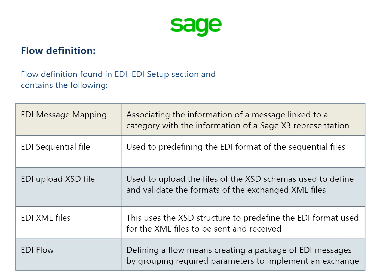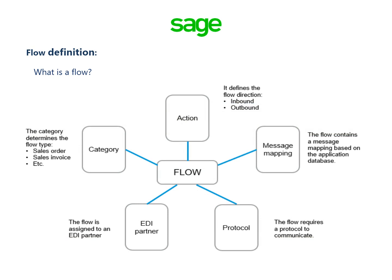EDI flow: Defining a flow means creating a package of EDI messages by grouping required parameters to implement an exchange, by specifying: the partner, which determines the protocol to be used (the protocol cannot be entered manually — it is the protocol associated with the EDI partner); the category, where messages always belong to the same category and must be linked to the entered partner; the action, which determines whether it is sent or received and the type of operation; message mapping, linked to this category along with associated messages; and the protocol, which must be present to communicate.